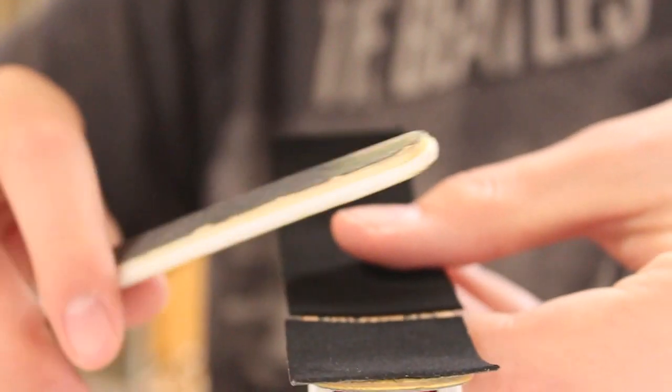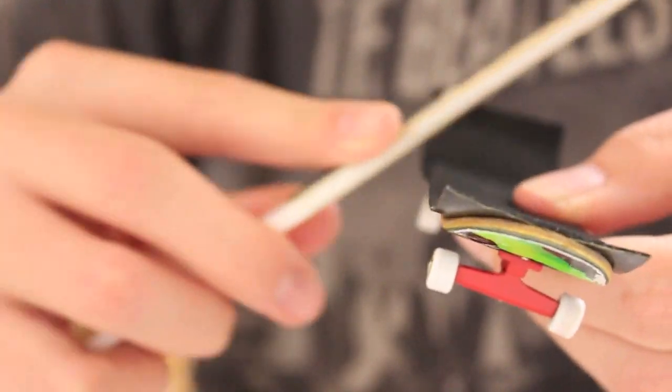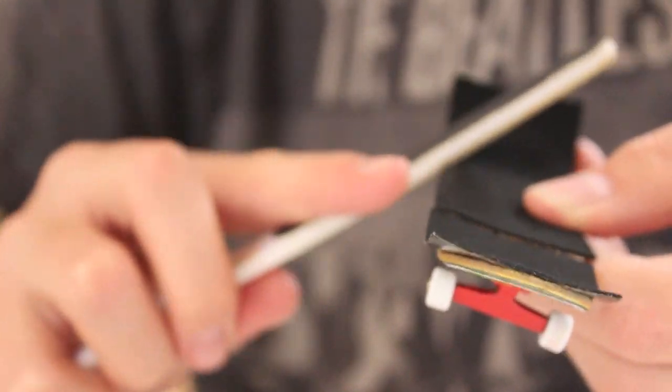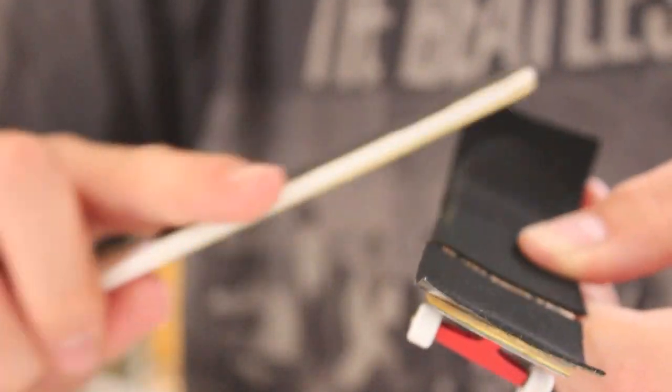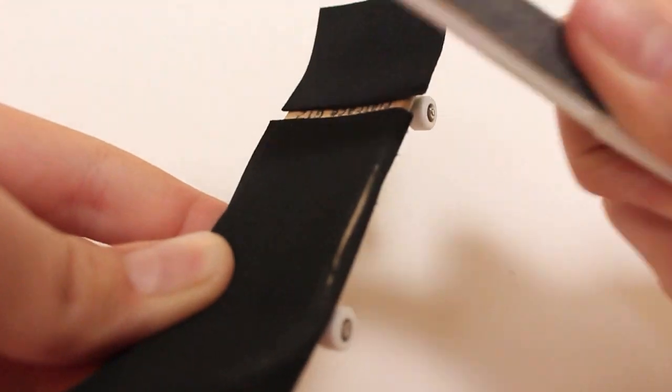Now, using your emery board, file down the edges of your grip tape at a slanted angle. Make sure not to do it in the same spot very long, because it could damage the wood. Once you see the wood break through, move on to different parts or areas of the fingerboard.